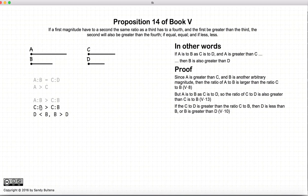Now, if c to d is greater than c to b, and we have two common magnitudes, c and d, if this relationship between these two ratios holds, according to Proposition 10, d would be less than b.